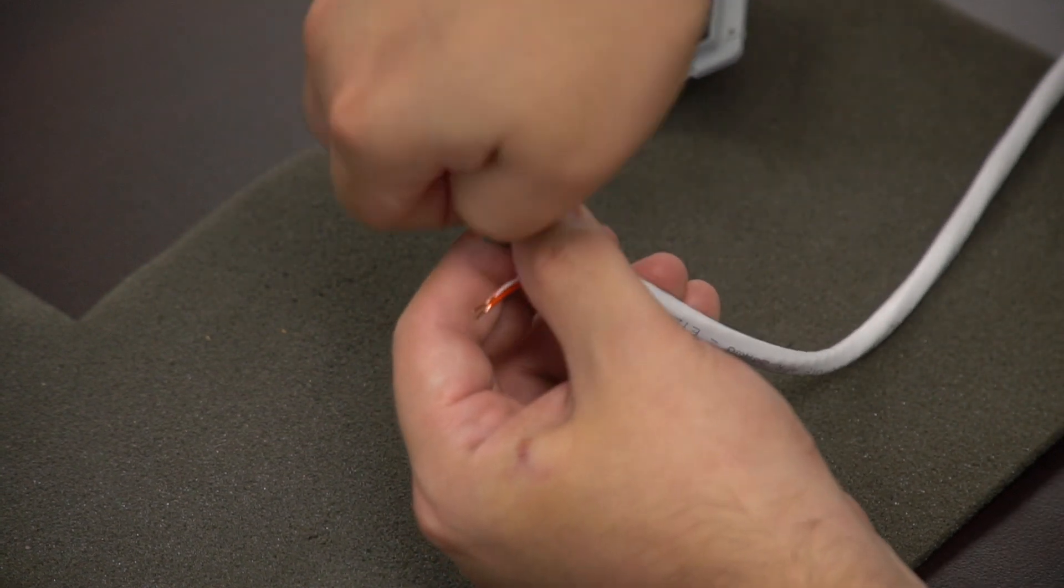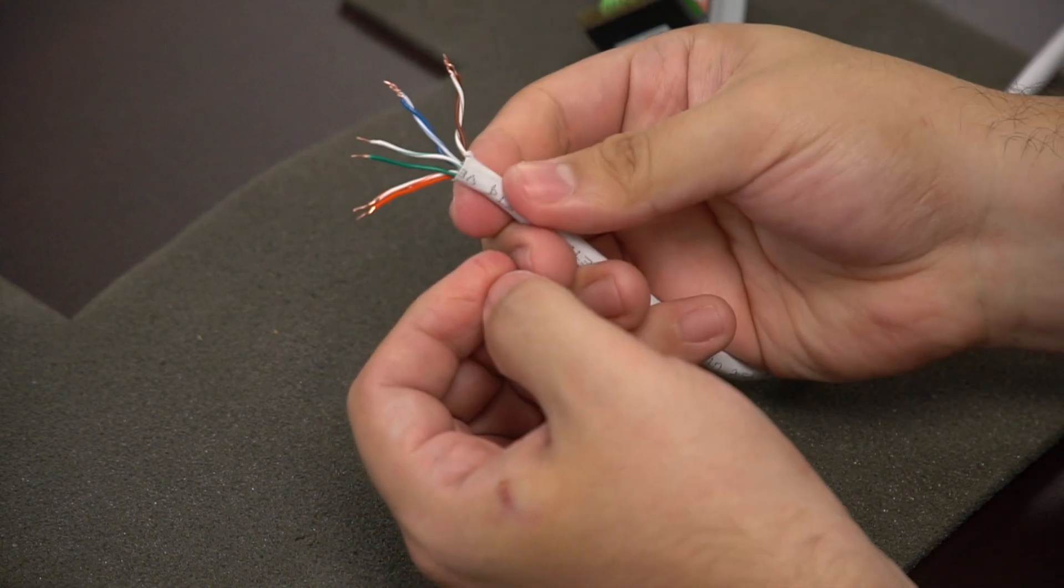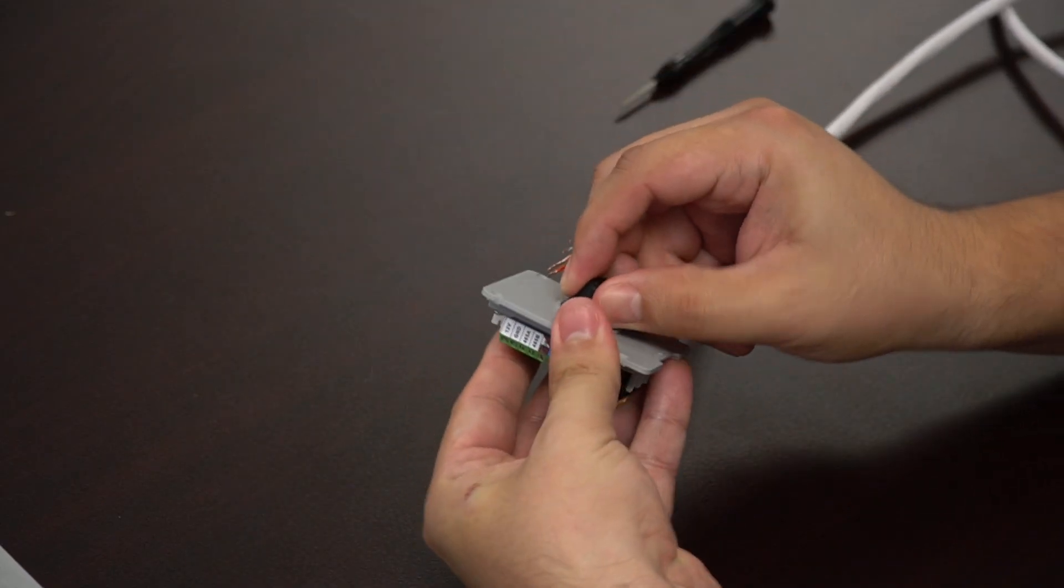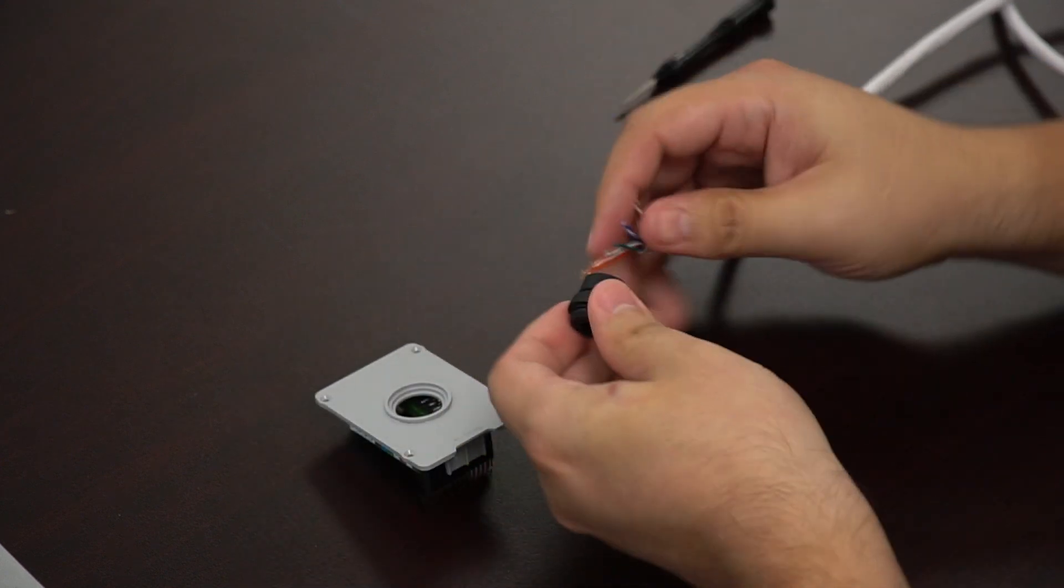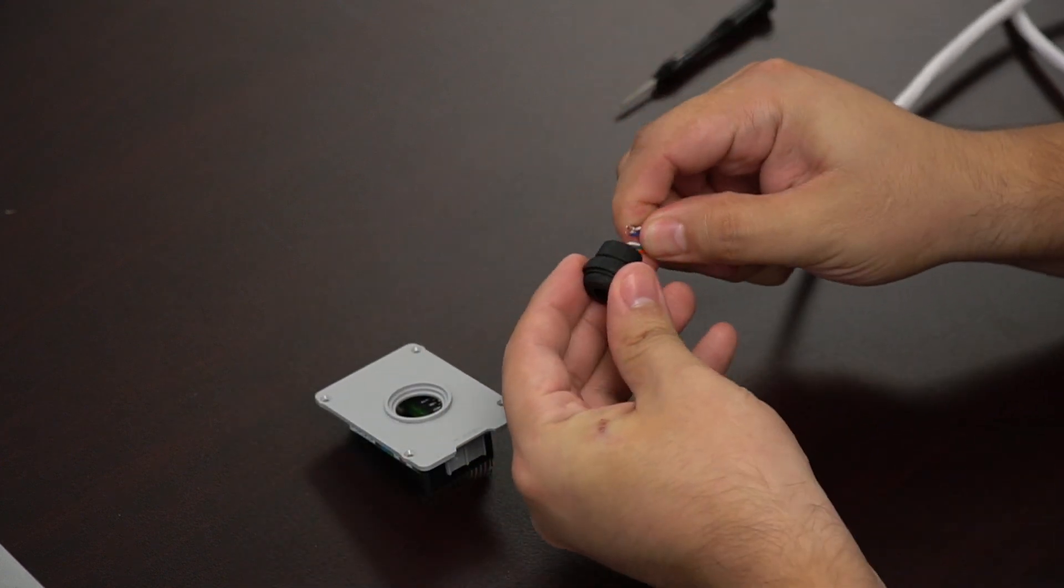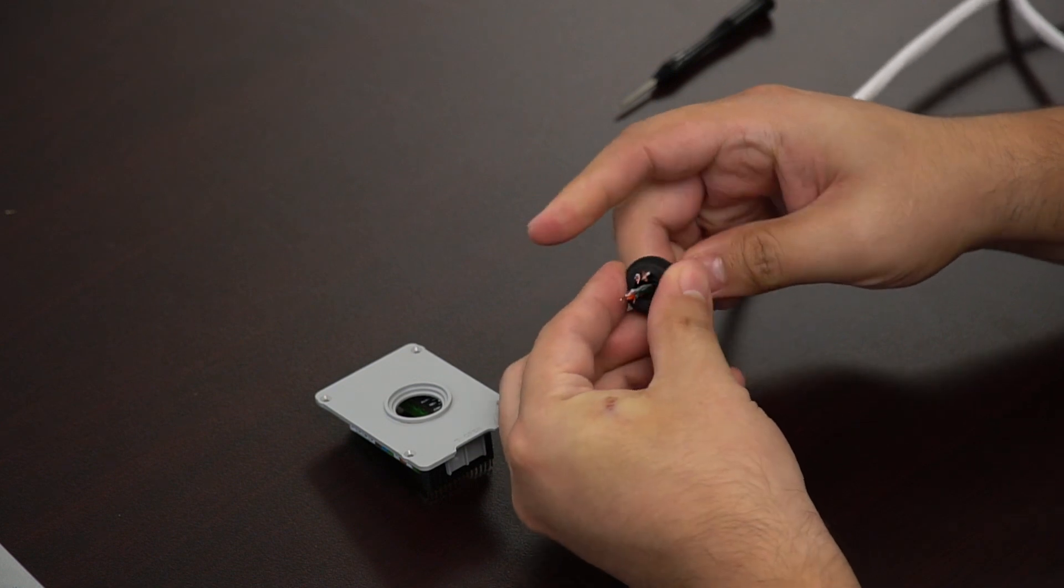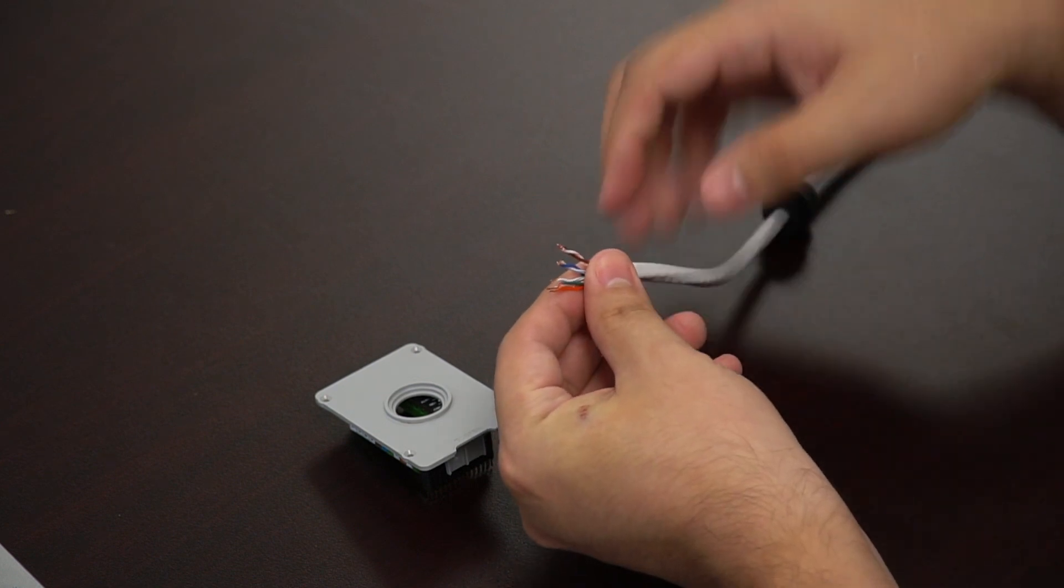One thing you should do is pull off that rubber grommet and go ahead and thread your ethernet cable through. It should fit nice and snug but not too snug to where you couldn't get any other wires past that grommet.